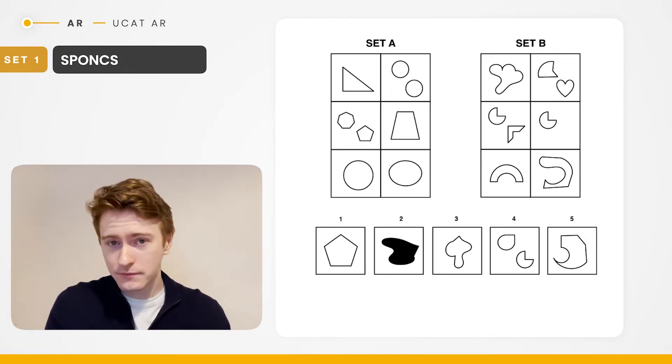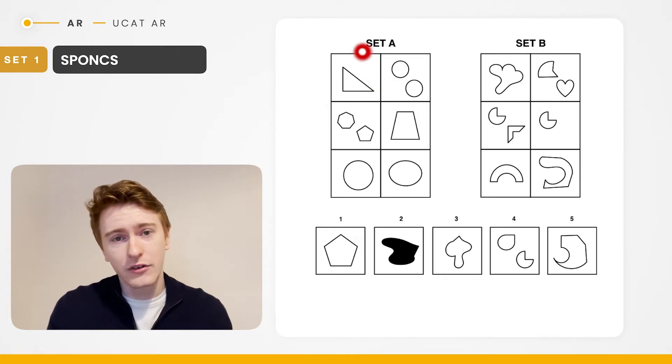Now if you didn't have that, by all means work through the SPONCS algorithm and first up on your list is shape. Investigate the shape. So in set A we can see that they are regular and that's because all of the angles are actually obtuse, 90 degrees or acute. None of them are reflex.